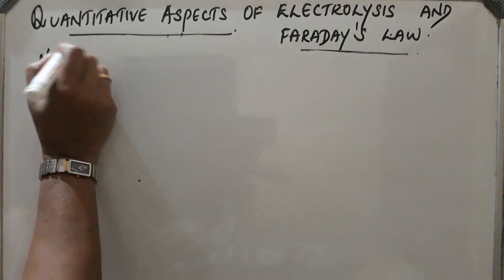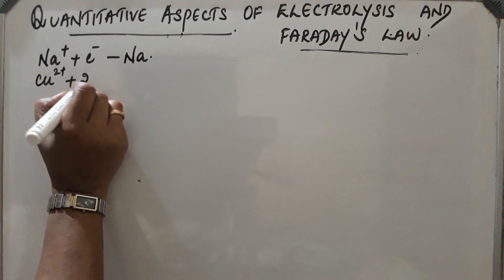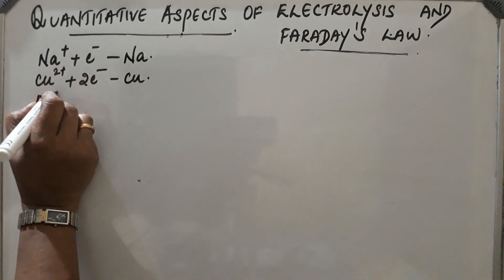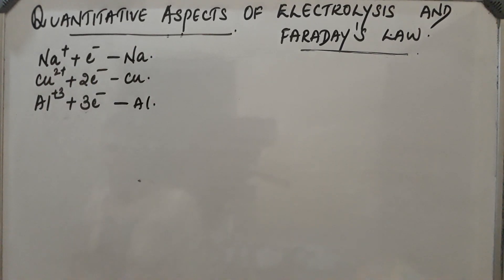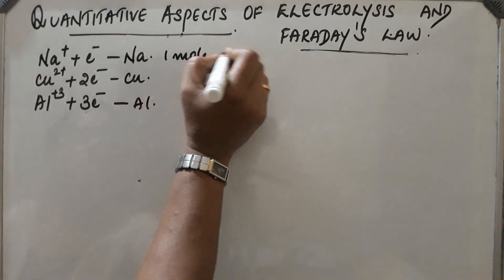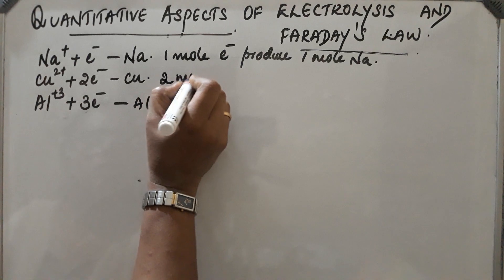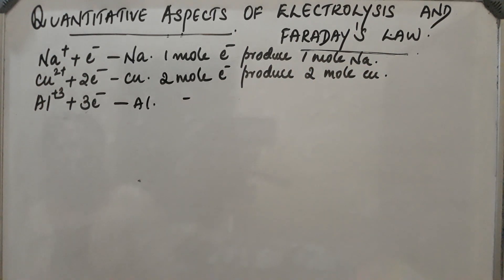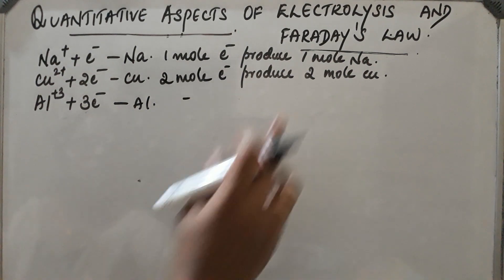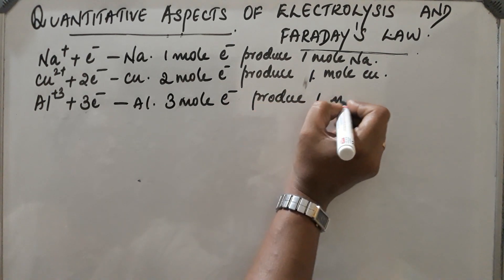For sodium (Na⁺), one electron is required to reduce it. For copper (Cu²⁺), two electrons are required. For aluminium (Al³⁺), three electrons are required. So, one mole of electrons produces one mole of sodium, two moles of electrons produce one mole of copper, and three moles of electrons produce one mole of aluminium.